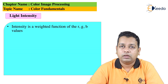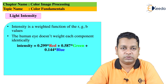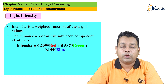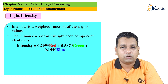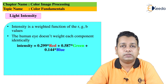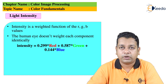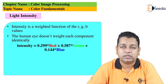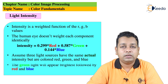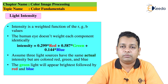Light intensity, taken as the information signal in an image, is a weighted function of R, G, and B values — the human eye does not weight each component identically. The relationship is: Intensity = 0.299×R + 0.587×G + 0.144×B. These three components by this computation give the intensity value in the resultant image appearing on the retina. Assuming three light sources of the same actual intensity but colored red, green, and blue, the green light appears brightest, followed by red and then blue, as seen from the multiplication factors.